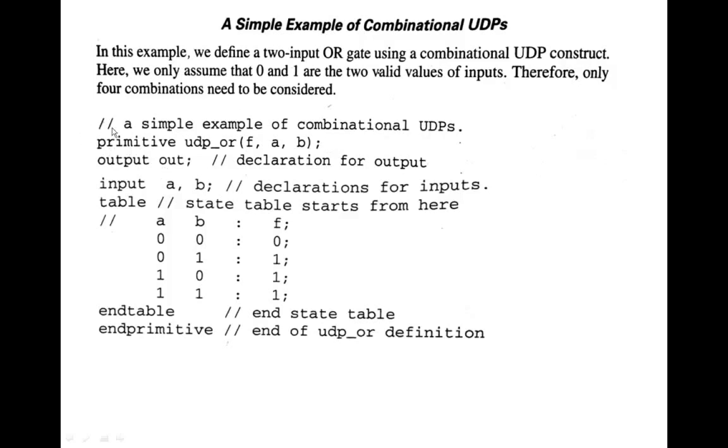Module, instead of primitive here, module. And then module name, and then here port list. In this port list, here we can have first inputs and then output. But in a primitive case, output is first, followed by that inputs will be.